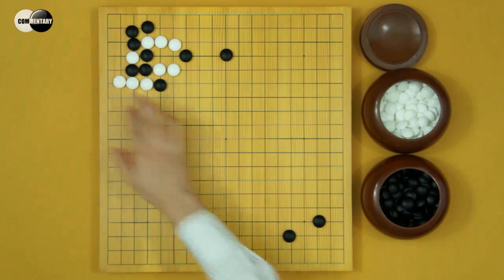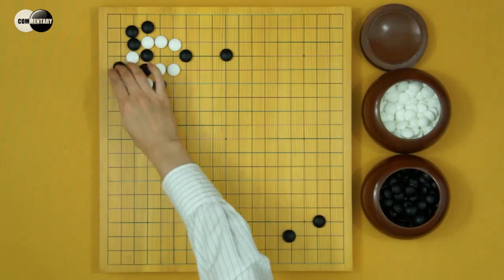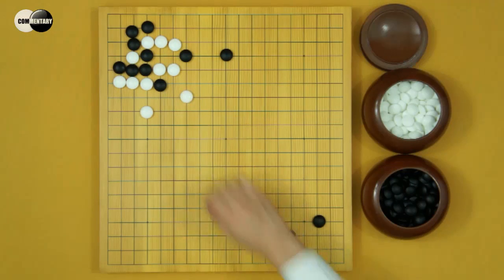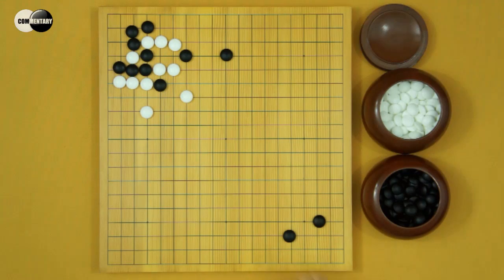This is White's sente. Then White keima to reinforce. Locally, White is very thick. But Black has sente and Black's speed is very fast. It's still an equal result.